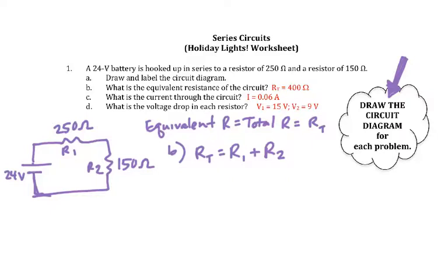Letter C says what is the current through the circuit. Current is I equals V over RT. Notice your formula sheet specifically says RT and not just R or R1 or R2. Current is the same everywhere in series, so it's really important to use RT and not just any random resistor.